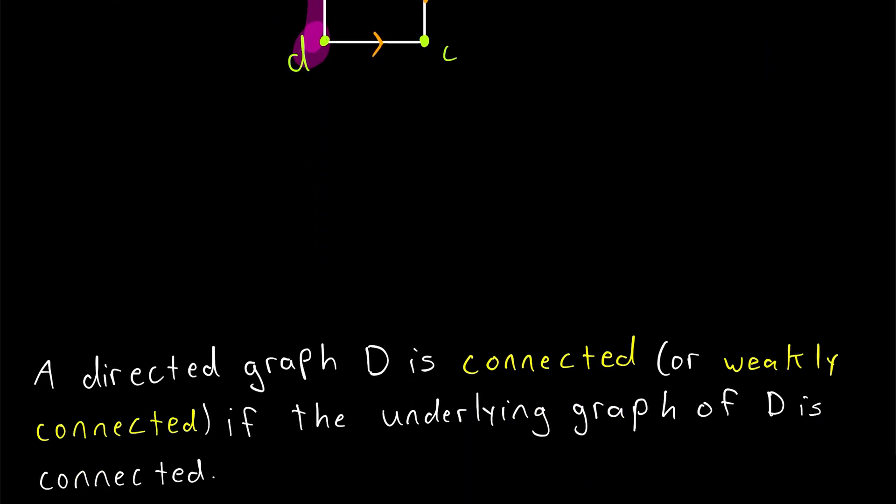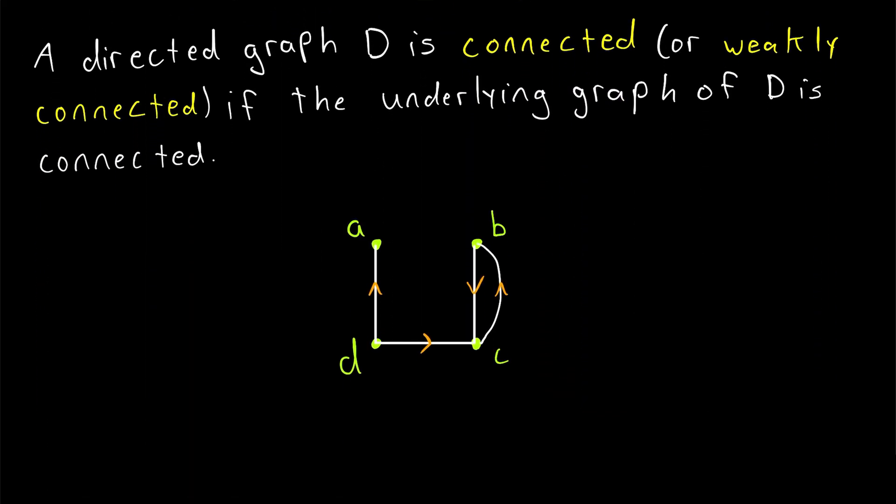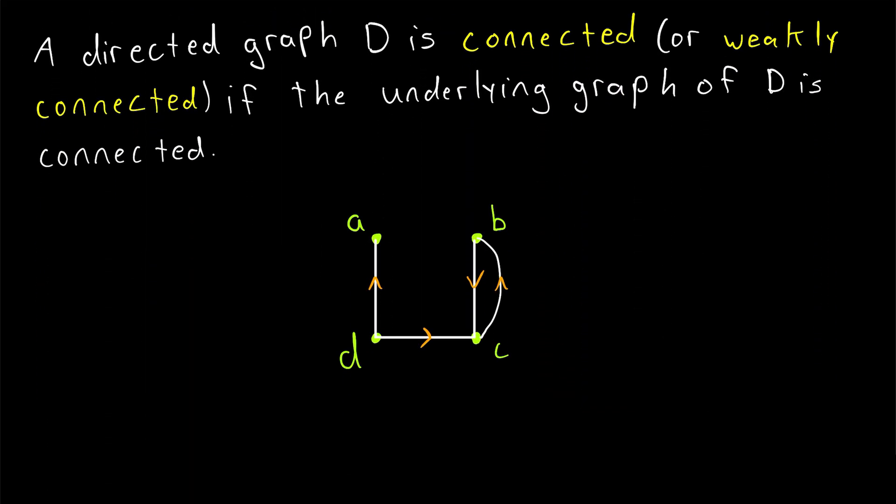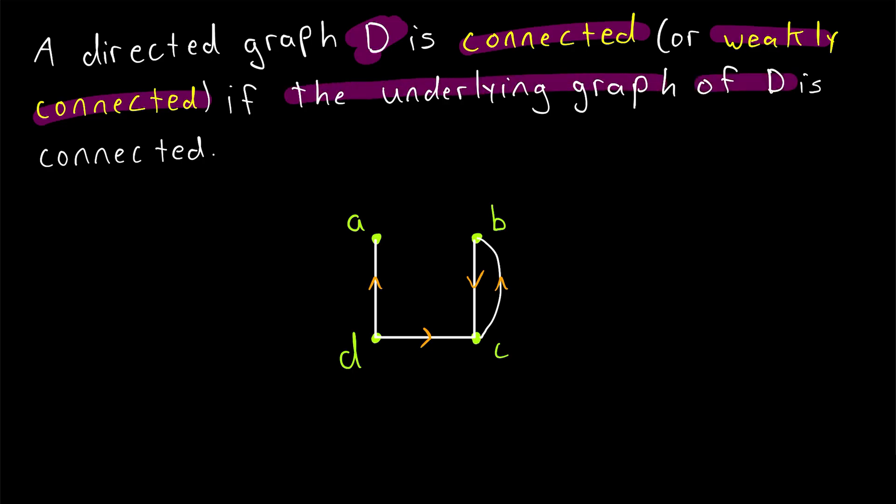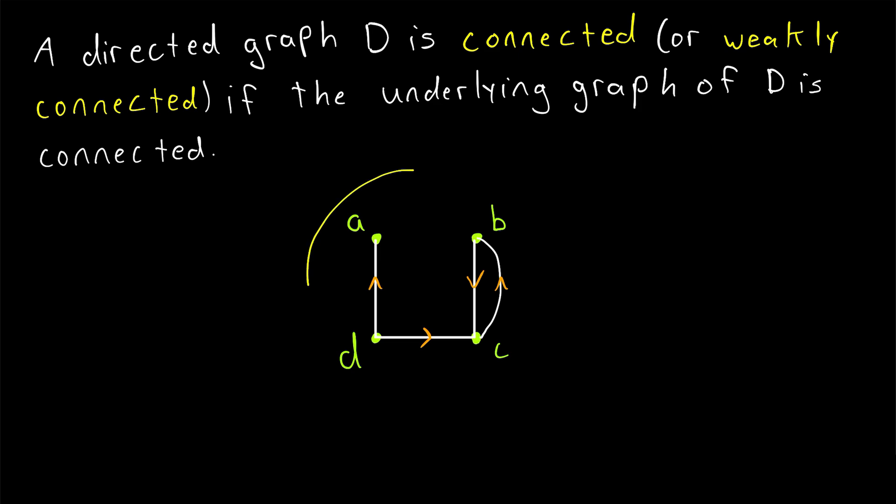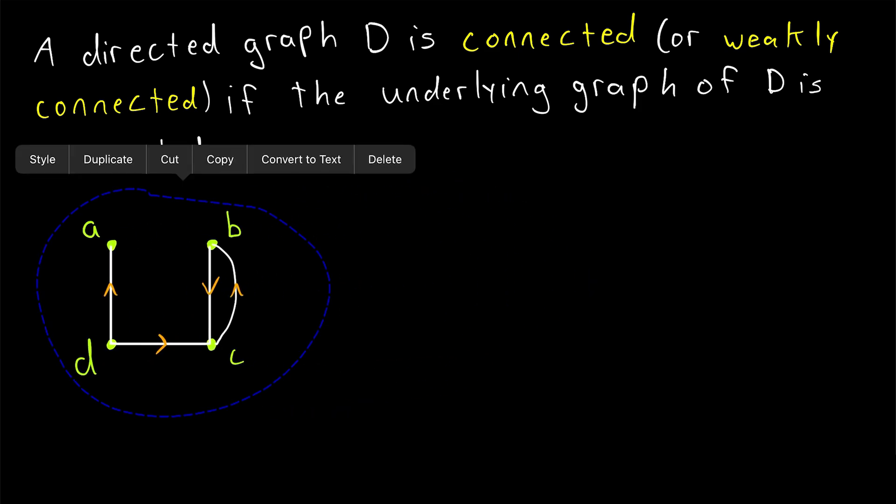The first way we might address this problem is with a definition called weakly connected, also sometimes just referred to as connected. So a directed graph D is connected, or weakly connected, if the underlying graph of D is connected. Recall that the underlying graph of a directed graph is obtained by removing the direction from the edges.